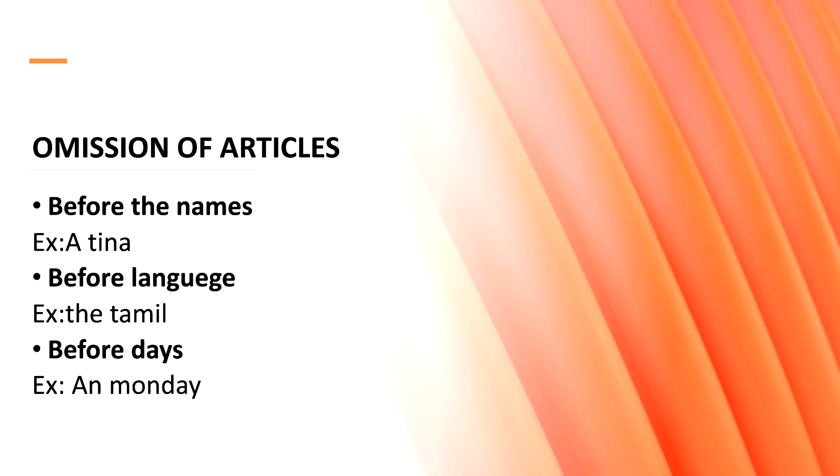For example, a name like Tina should not be said as 'a Tina'. Before a language, 'the Tamil'—it has to be said like only Tamil or any other particular pronunciation for telling it. In these cases, none of the articles like 'a', 'an', or 'the'—all three should not be used.